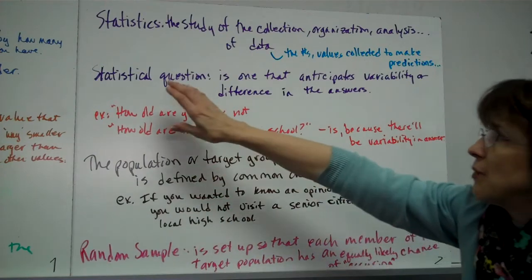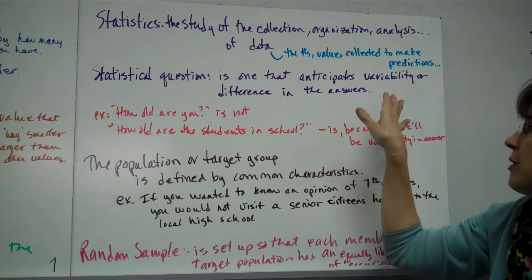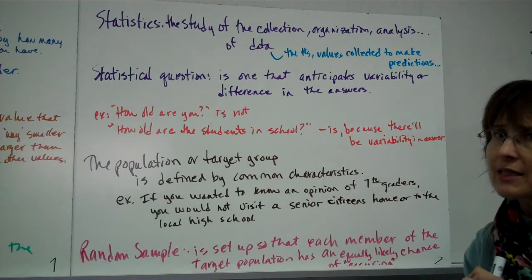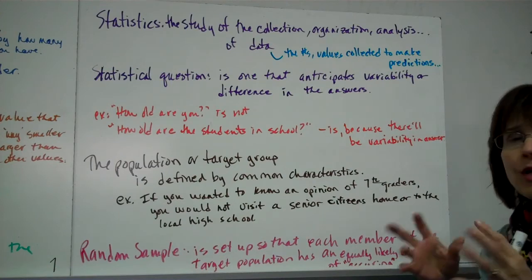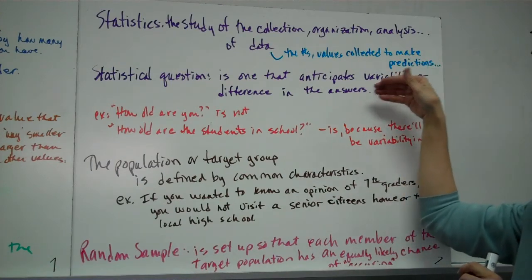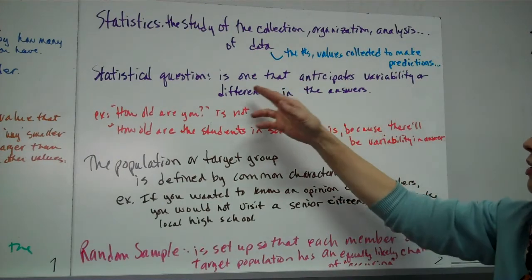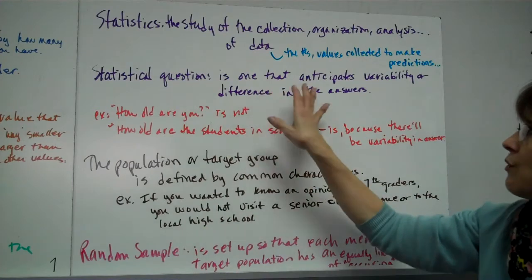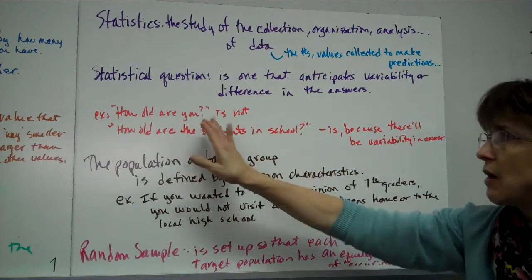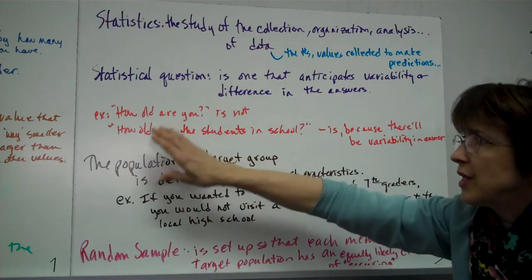Okay, so a statistical question is one that anticipates variability or difference in the answers. What that all means, we're going to have a lot of big words that seem like, oh, I don't know what they mean, but if you just break it down, you can kind of tell what they mean. Variability is vary. It's like a variable. It's something we don't, it could be any number. So you want to ask a question that's going to have a lot of different answers. Like if I ask you how old you are, that's like one answer. That is not a statistical question.